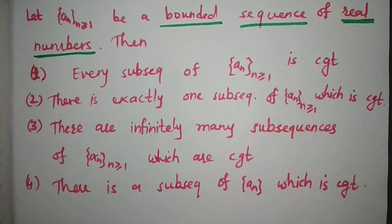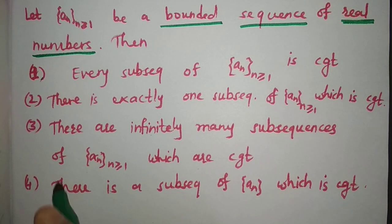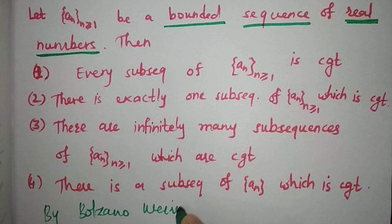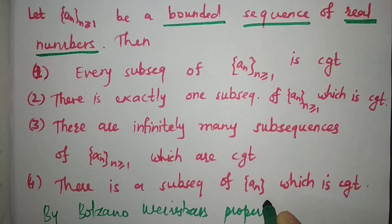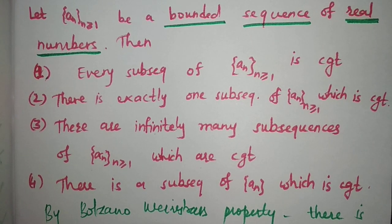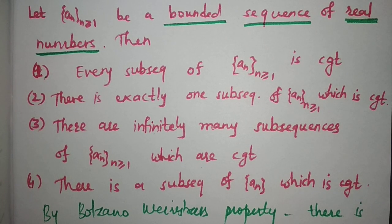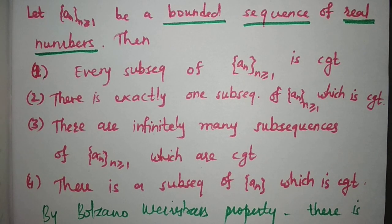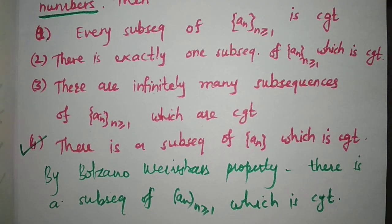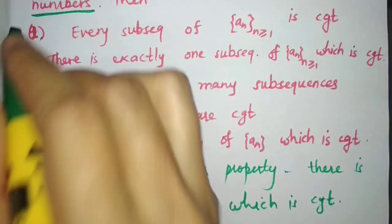By the Bolzano-Weierstrass property, there is a subsequence of a_n which is convergent, so the fourth option is correct. Now we cannot say that every subsequence of a_n is convergent. Let us take a counter example for option one.